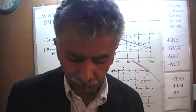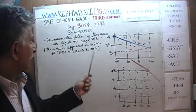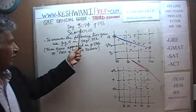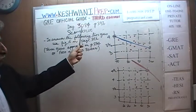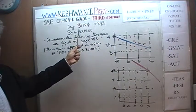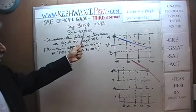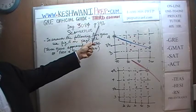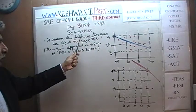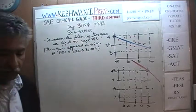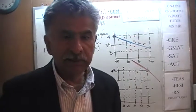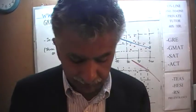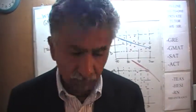Today is our lesson number 84 — Day 3084. The 3 is to indicate that we are in the third edition. Day 84, we are on page number 292 and we are dealing with the topic of scatterplot, something that we started in yesterday's video.